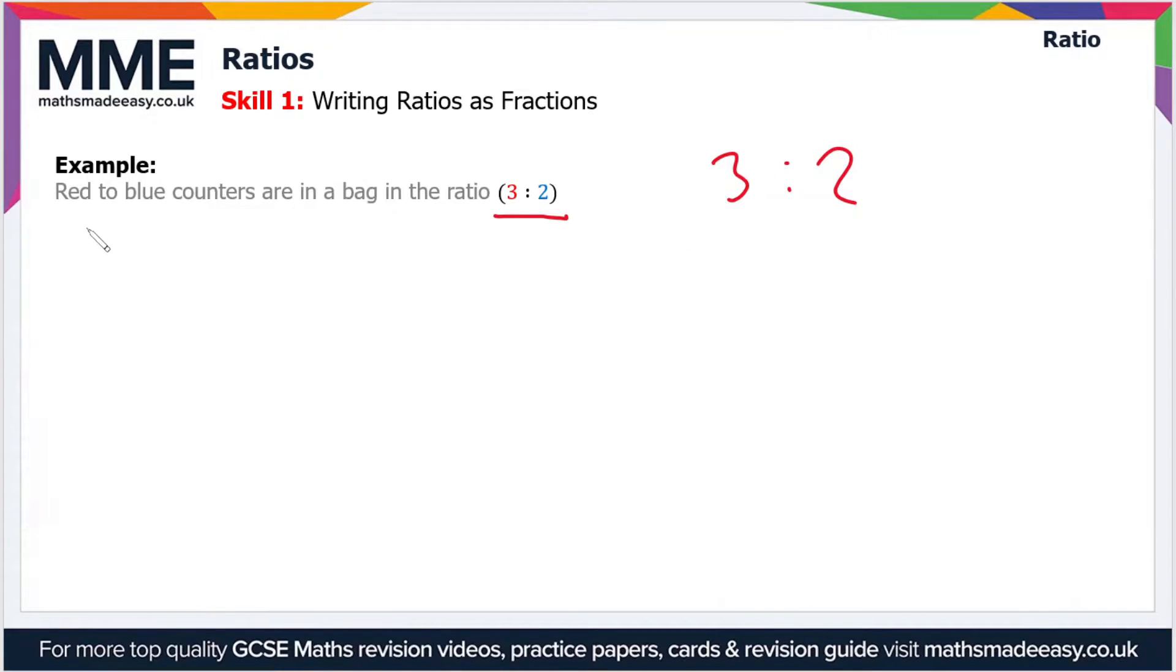If we want to write the number of red counters as a fraction of the number of blue counters, we can say that there are 3/2 times as many red versus blue. This is just a shorthand way of writing it. Conversely, we could say that there are 2/3 times as many blue counters as there are red counters.